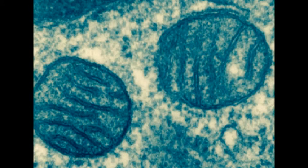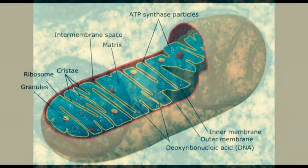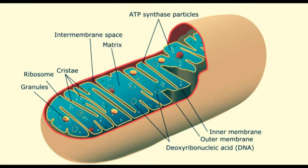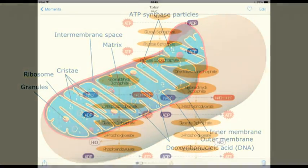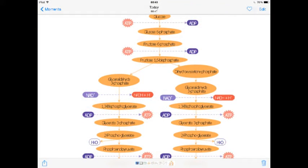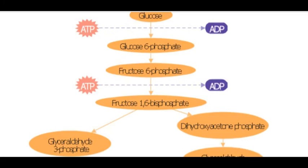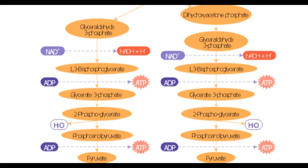Respiration proper occurs in organelles in the cells called mitochondria. However, before this, glycolysis occurs in the cytoplasm. In glycolysis, the six-carbon glucose molecule is first changed into a molecule of fructose 1,6-bisphosphate, which is then changed into two three-carbon molecules of pyruvate.